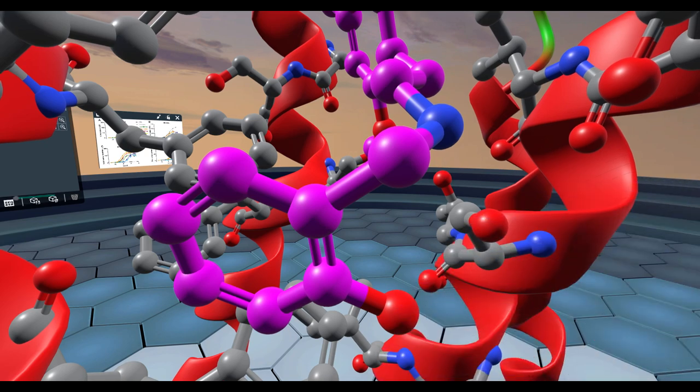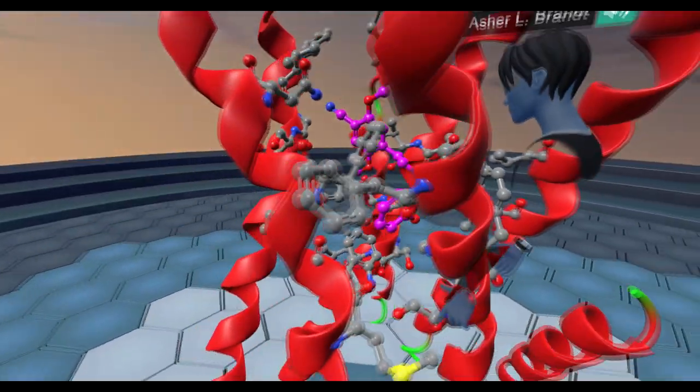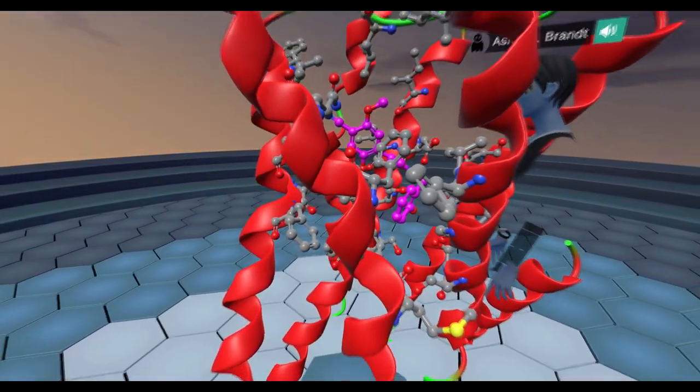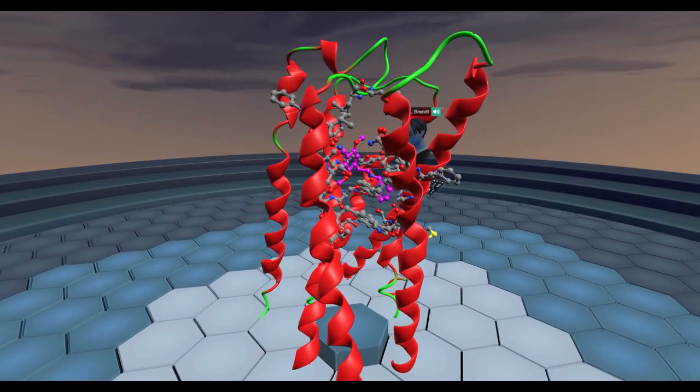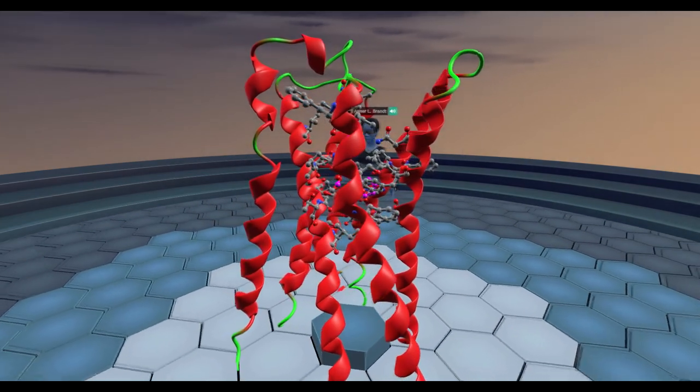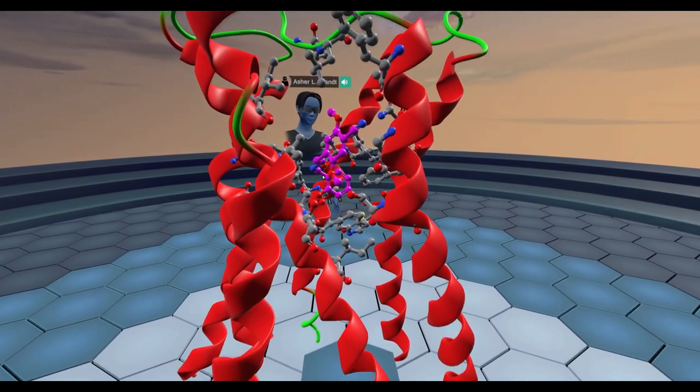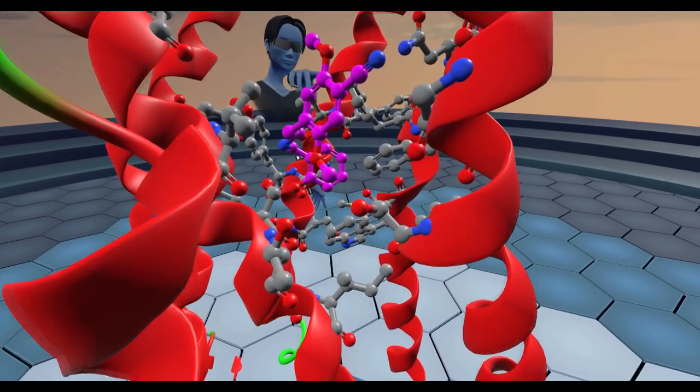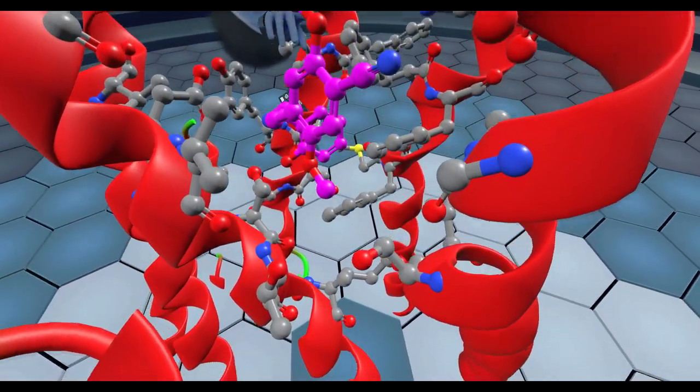So what we kind of want to look at is how do other N-bomb compounds bind to serotonin 2A crystal structure, and if we change some of these groups, can we change the activity of that drug at the receptor? For example, the methoxy groups in this N-bomb compound are in the two position and the five position.